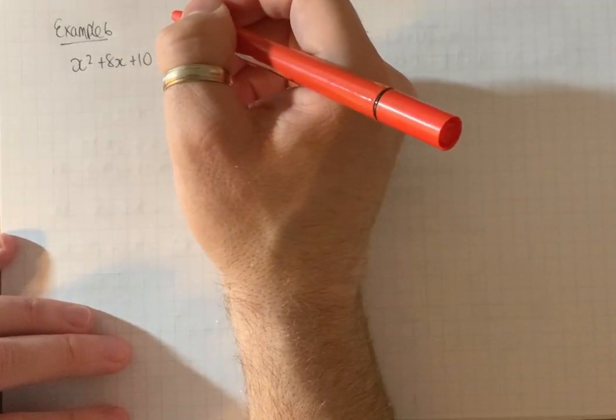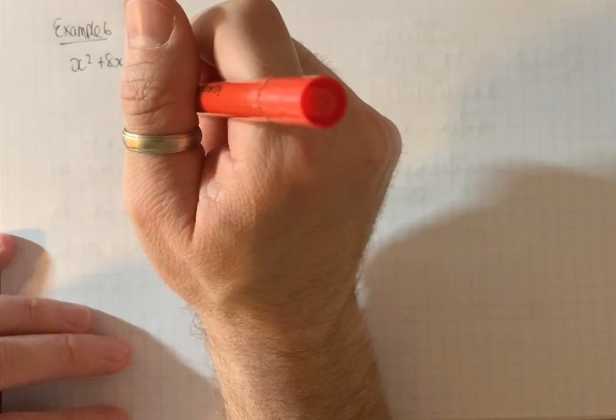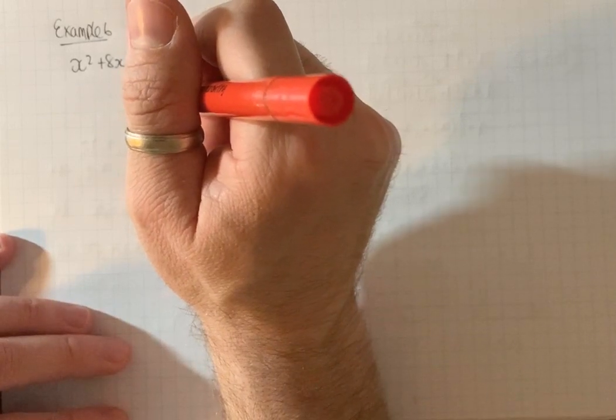Give your answer in surd form, so that means you need to leave a square root in your final answer. You can't use a calculator working out to decimals.